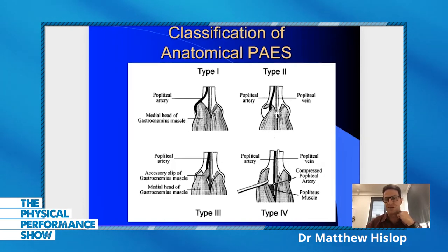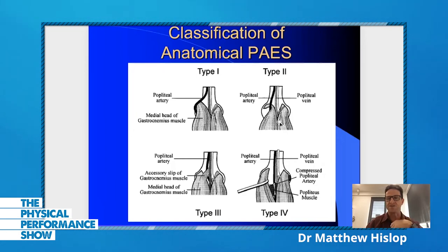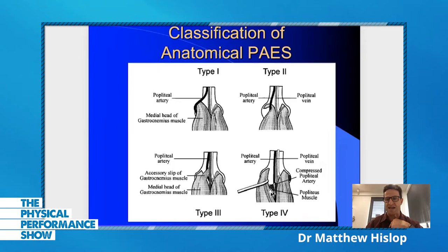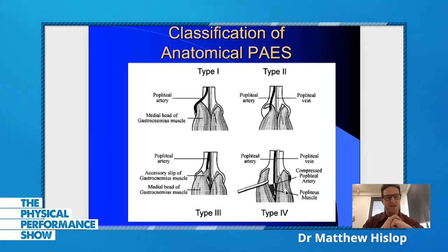In type two, there's a fibrous band that has surrounded the popliteal artery and is almost strangling it. In type three, the artery has developed in the middle of the medial head of gastroc, constricting and tightening it. In type four, the original primitive popliteal artery never disappeared and stayed running deep to popliteus. These are examples of anatomical popliteal artery entrapment syndrome.